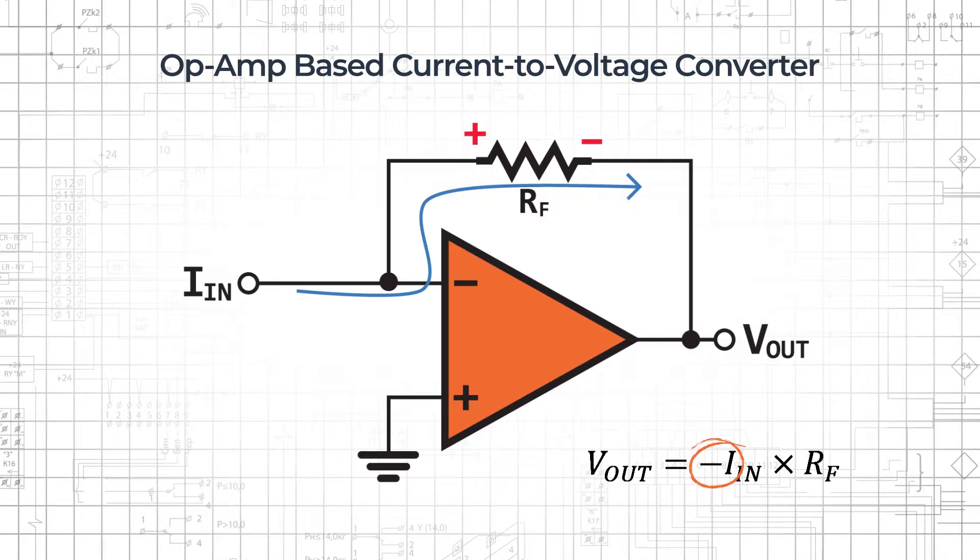The negative sign in this equation is an important detail. The right-hand terminal of the resistor is at a lower potential than the left-hand terminal, and since the left-hand terminal is at virtual ground, the output voltage will be negative.